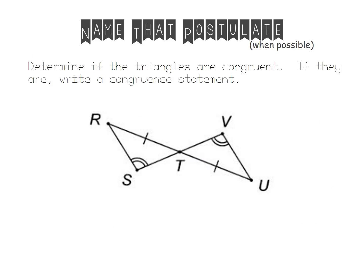In this example, we need to determine if the triangles are congruent, and if they are, we're going to write a congruency statement. They tell us we already have two angles congruent and two sides are congruent. Is there anything else in the picture we can figure out? Any other angles or sides we automatically know are congruent? I hope we notice that the angles in here are congruent because they are vertical angles. So now it looks like I have a set of angles congruent, another set of angles congruent, and a side congruent. The side is not between the angles, so I have AAS. AAS does prove congruency, so the triangles are congruent.